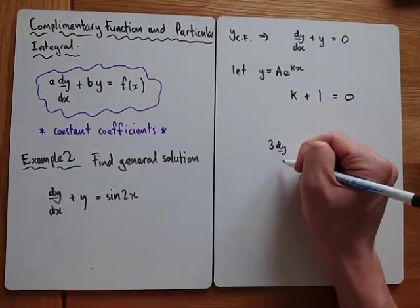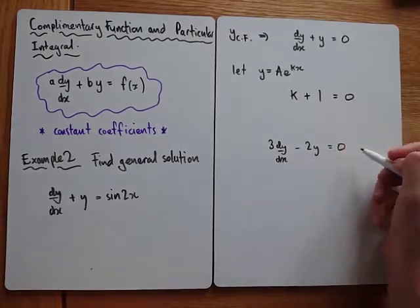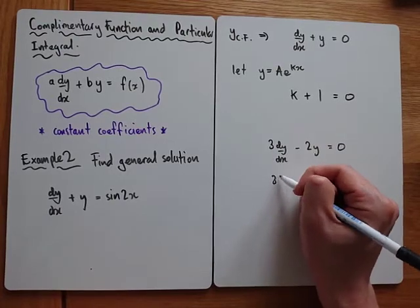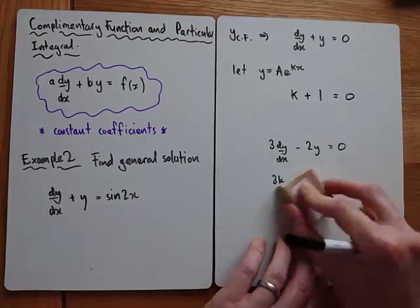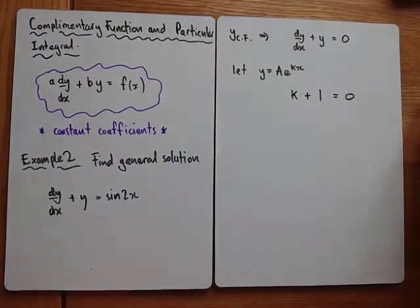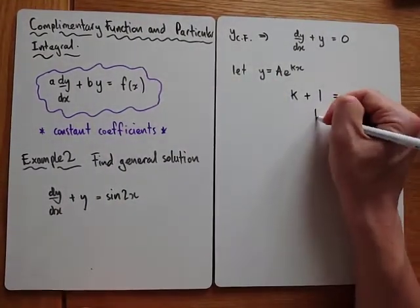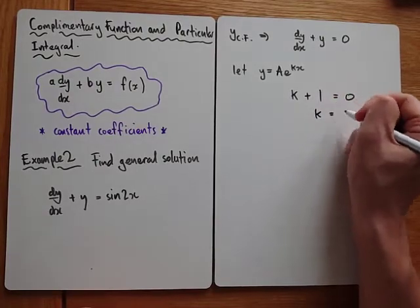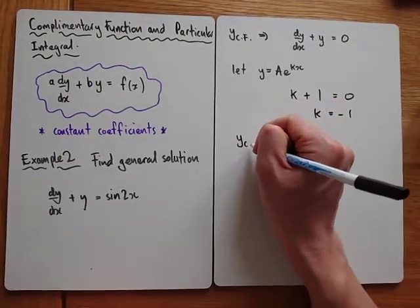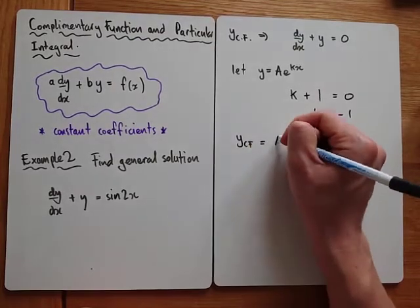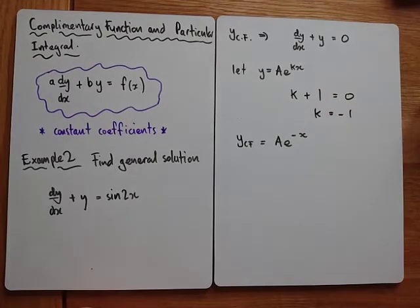So we could literally just skip from dy/dx plus y to k plus one equals zero. For example, if it was 3 dy/dx minus 2y equals zero, that would give me 3k minus 2 equals zero. You can literally just state it's going to be an exponential and skip to this step. So k equals minus one, meaning my complementary function is A e to the minus x.